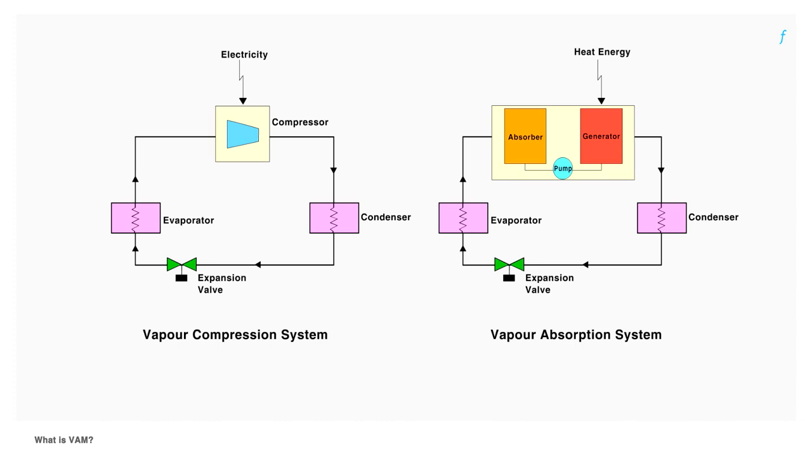Conventional air conditioning systems are mostly vapor compression machines. VAM is similar to these systems but has two distinguishing elements. First, VAM doesn't use a compressor which is the most energy intensive component of any refrigeration system. This is replaced by an absorber generator unit. Secondly, VAM is powered by heat energy compared to vapor compression machines which are powered by electrical energy.